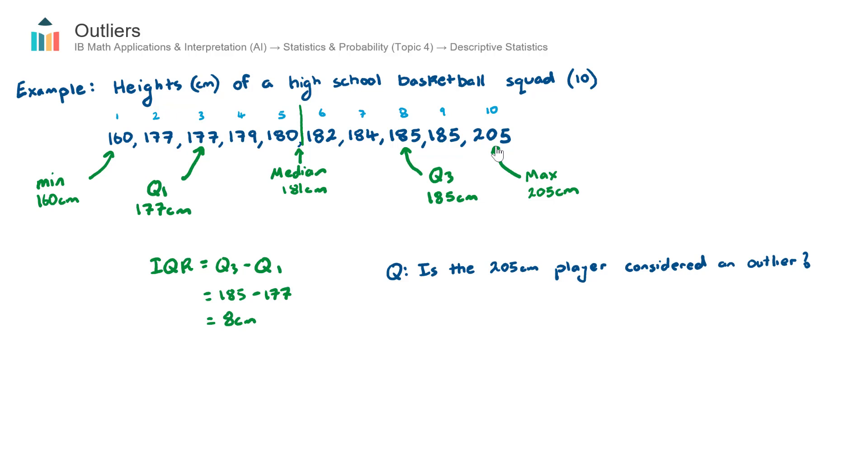So the goal of this video is to test whether this player is in fact an outlier or not. Now different textbooks use different tests to determine whether a data value is an outlier or not. A very common test and the one that is used by the AI course is this test here.